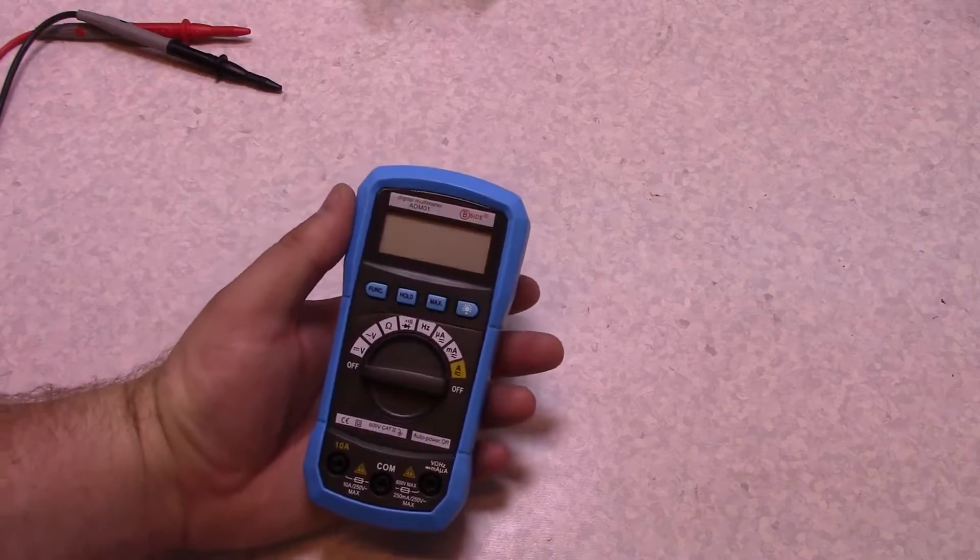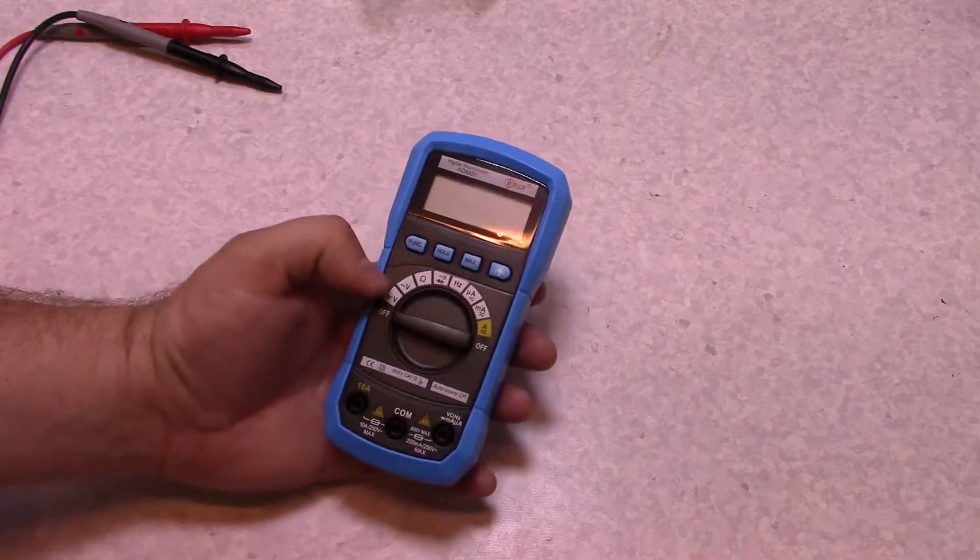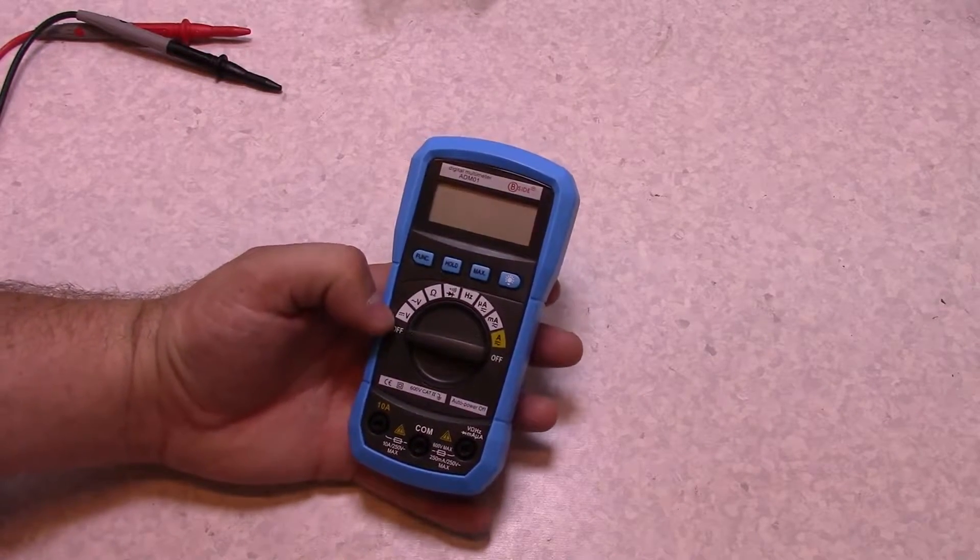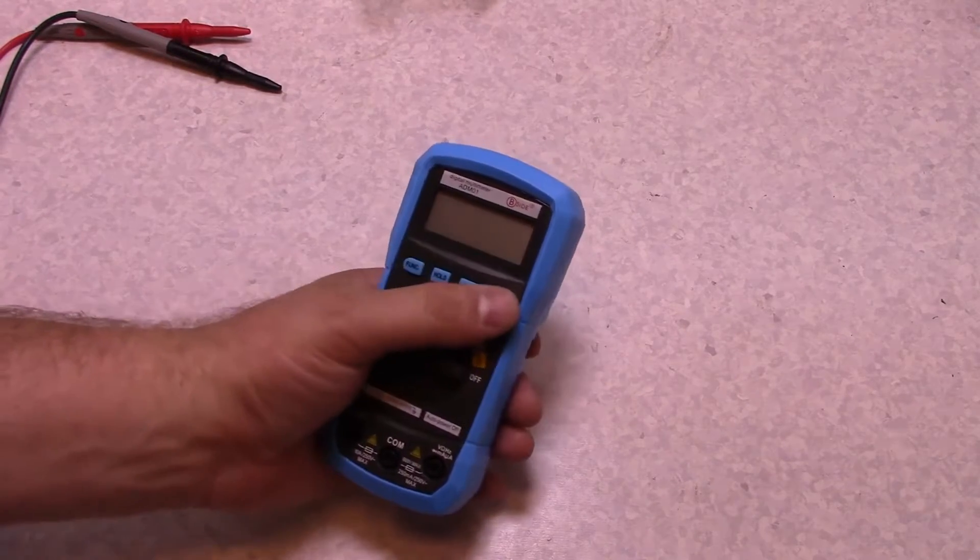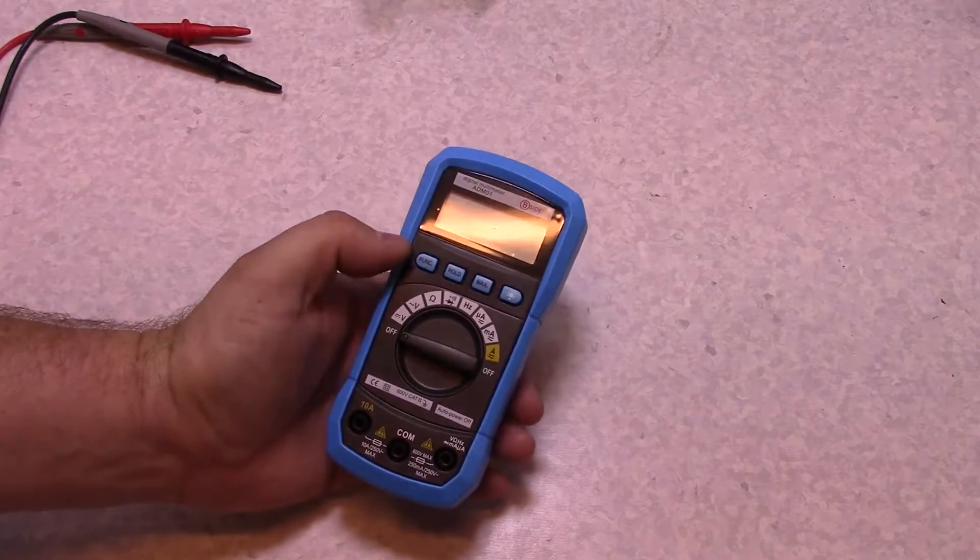And the thing that caught my eye about this is that the range switch here looks an awful lot like the unity meter. So it made me wonder, but they do have a backlight, so a couple extra buttons here.